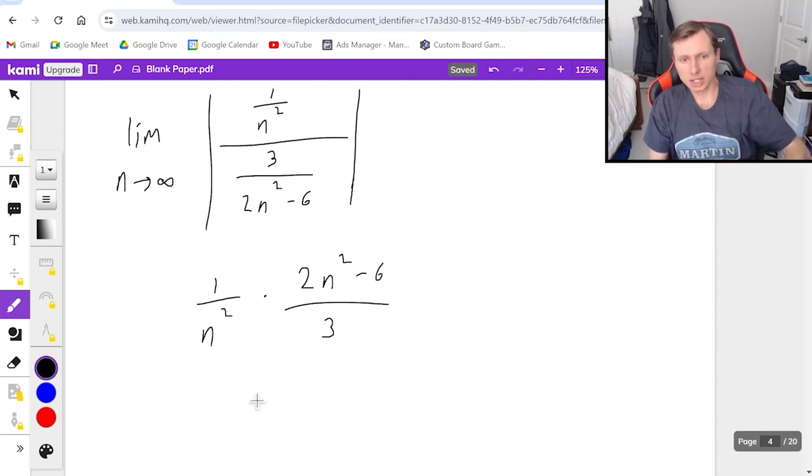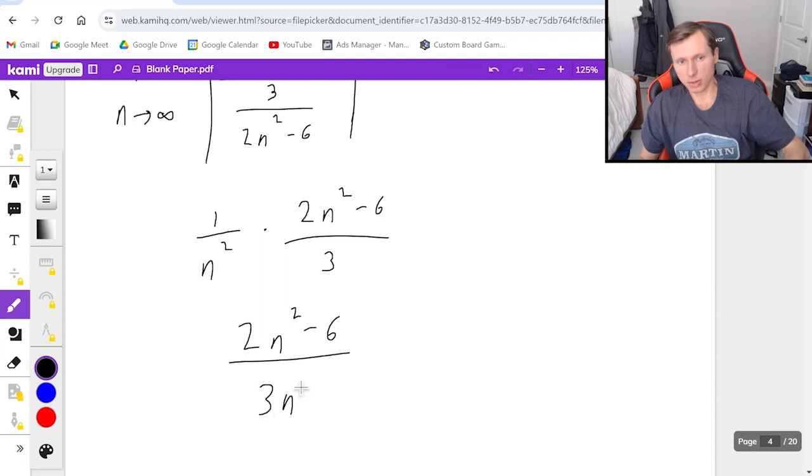And then I just multiply across. Numerator is 2n squared minus 6. Denominator is 3n squared. And now I just got to take the limit as n goes to infinity here.